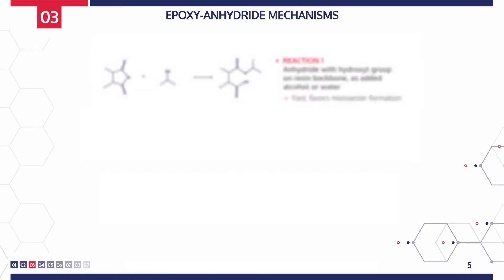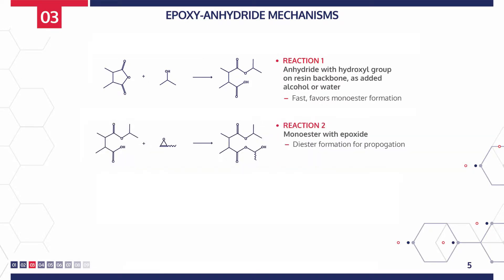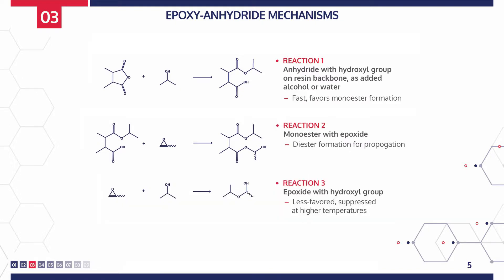Looking at these three reactions — one, two, and three — as the classically well-accepted major reactions in these systems: reactions one and two in sequence are what create the cross-link between the epoxy resin and the anhydride linkage. Reaction three is the homopolymerization reaction of the epoxy resin. These reactions are all happening at the same time and competing with each other. The right catalyst would preferentially accelerate specific reactions, and we as formulators or chemists can steer the reaction in a certain direction.